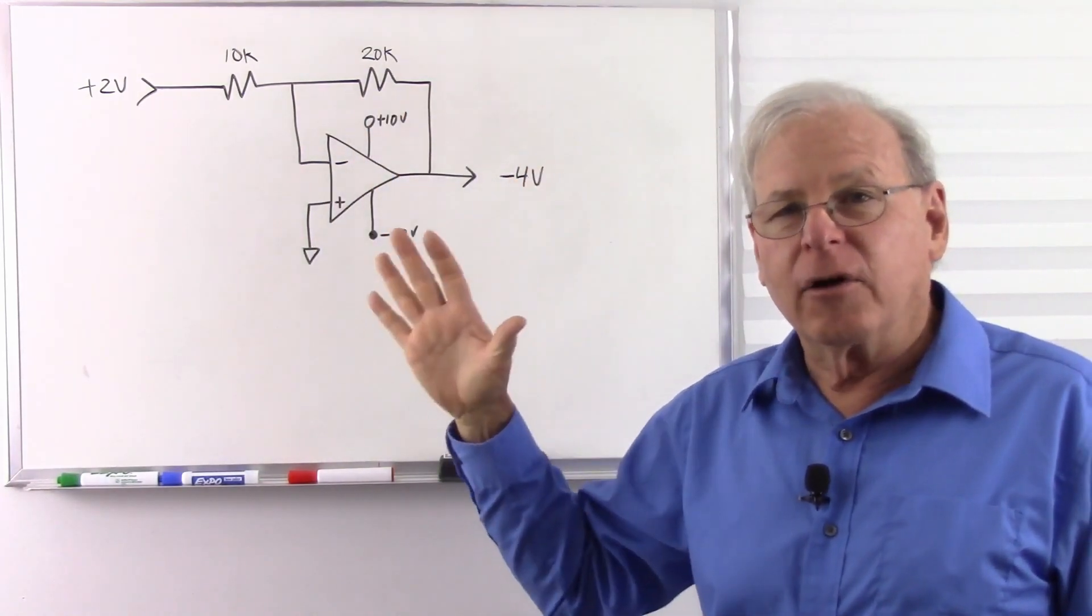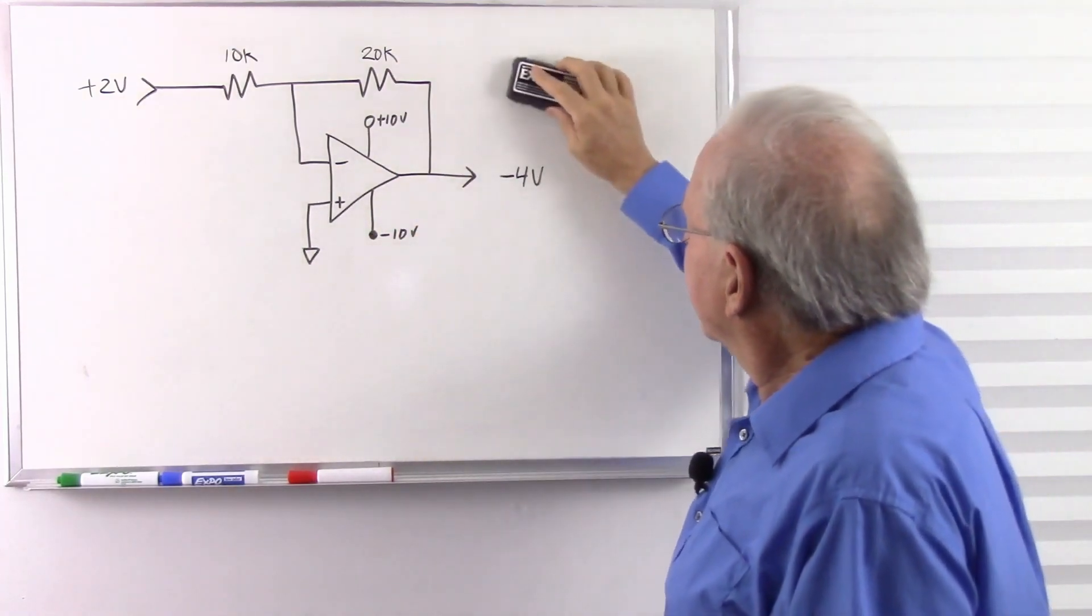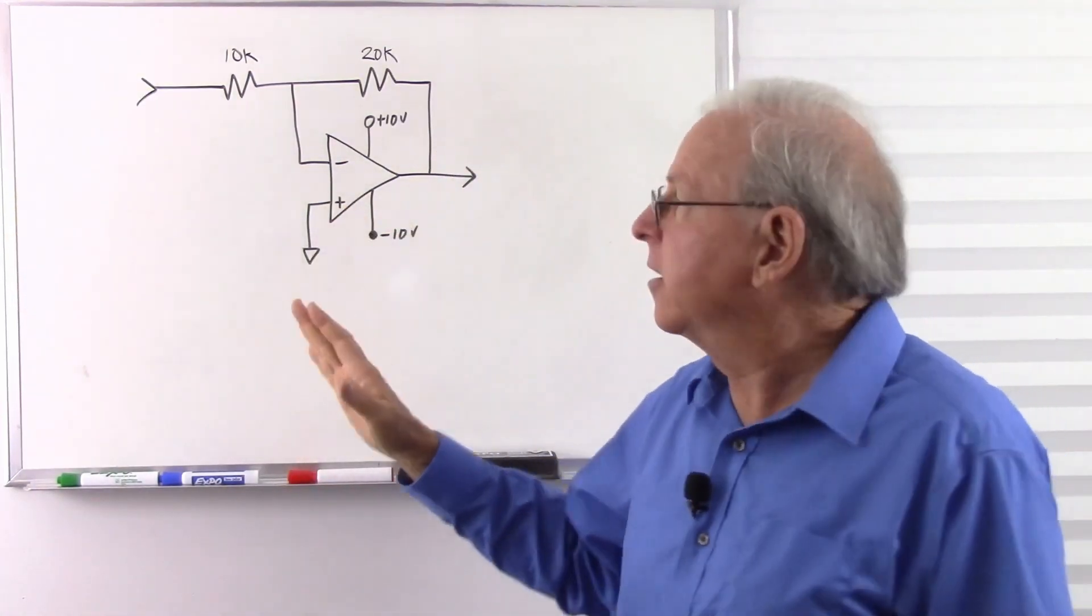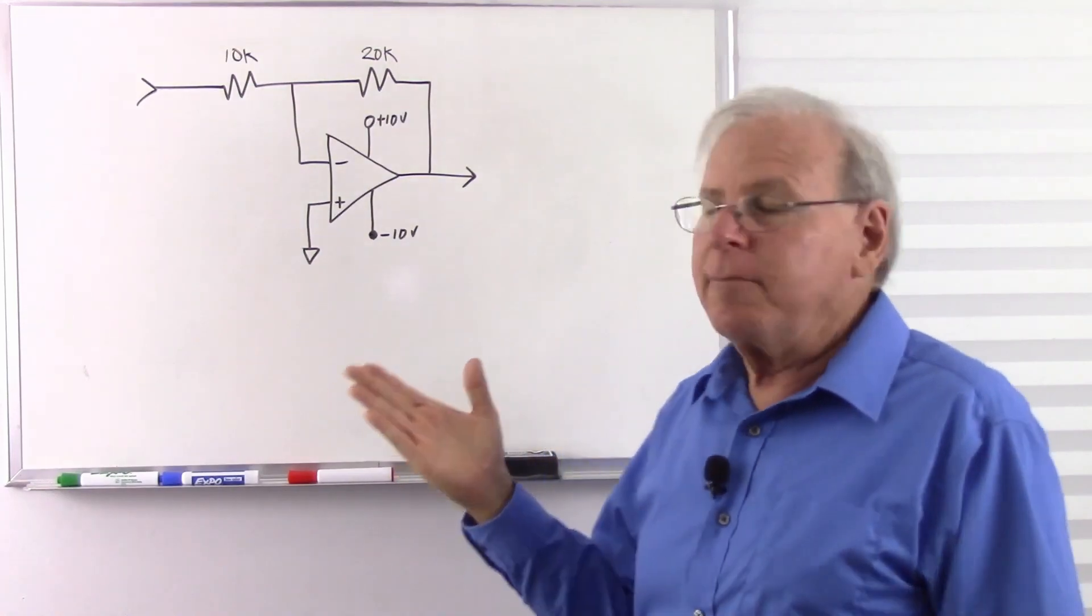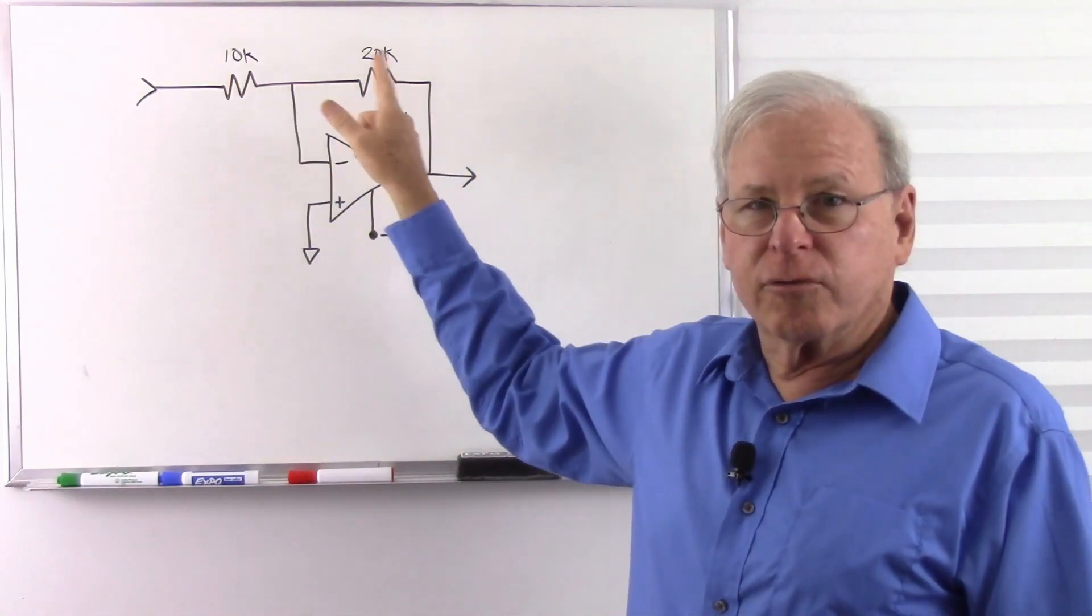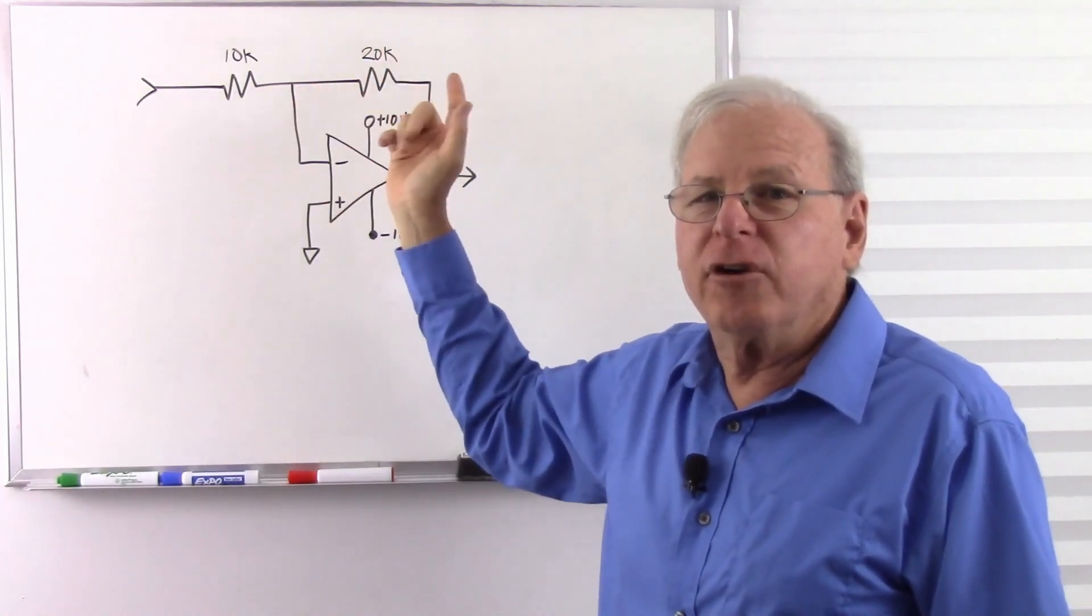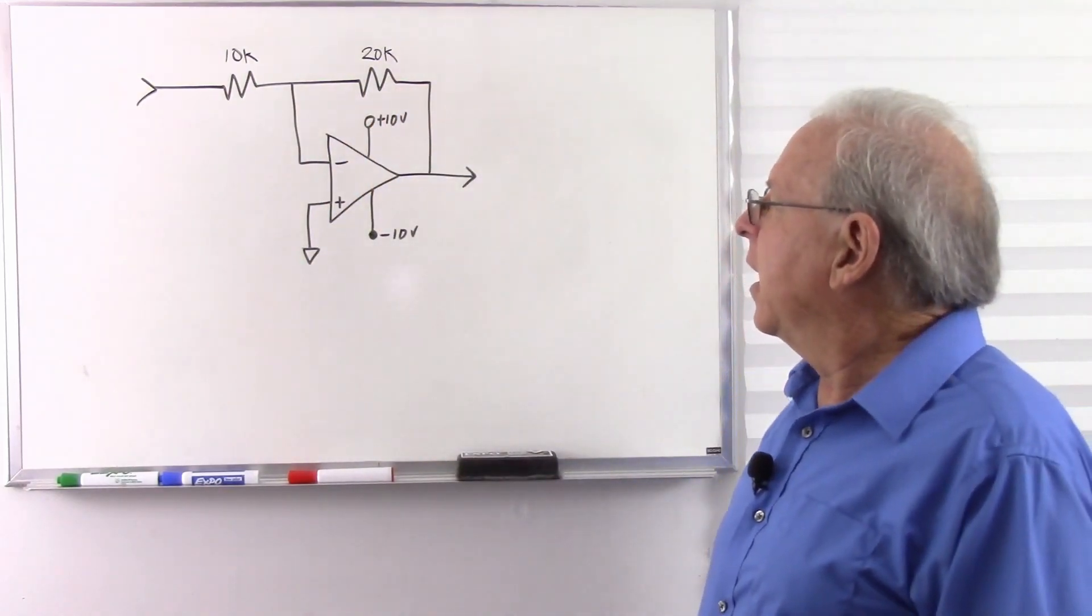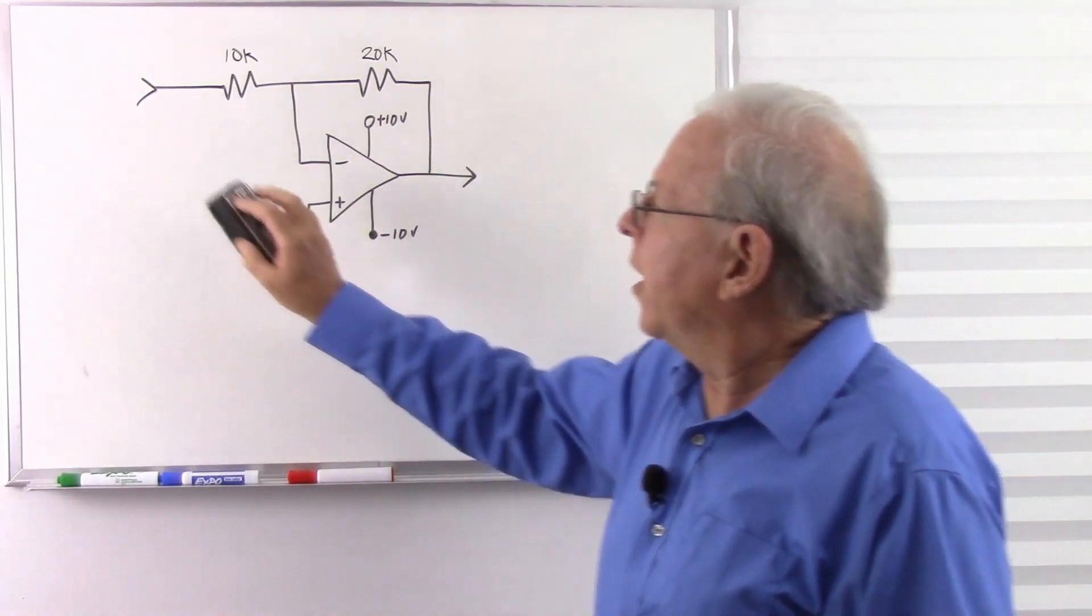Typically it's used as an audio amplifier or other frequencies that are below 1 megahertz. So it doesn't matter that it inverts. It's just a very quick and easy amplifier to make. All I need to do is choose my ratio of resistors, and that's my gain.